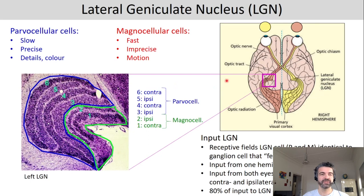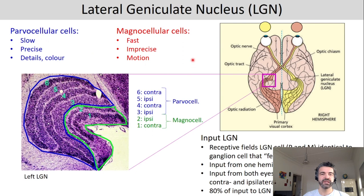If you remember, on the retinal level we had P and M ganglion cells. P ganglion cells are getting input mostly from cones, have slow receptive fields, and they are now transferring information to the parvocellular cells in the LGN. The M ganglion cells have large receptive fields, mostly getting input from rods, and they transfer information to the magnocellular cells in the LGN.